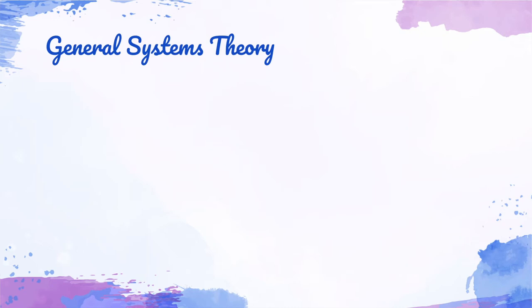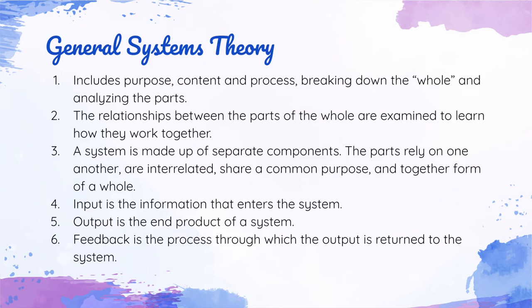The background of the theory. Systems theory was first proposed by Ludwig von Bertalephi as General Systems Theory, which includes purpose, content, and process, breaking down the whole and analyzing the parts. Second, the relationships between the parts of the whole are examined to learn how they work together. Third, a system is made up of separate components — the parts rely on one another, are interrelated, share a common purpose, and together form a whole. Fourth, input is the information that enters the system. Fifth, output is the end product of a system. Sixth, feedback is the process through which the output is returned to the system.